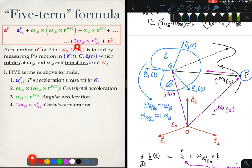The fourth term in pink, this is the most controversial term in the sense that it is the hardest to understand, is called the Coriolis acceleration.